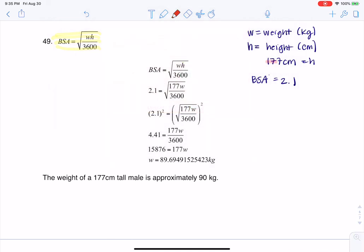So let me just change the color here. So I was given this and given this. So I was given the height of this male and I was given his body surface area and I was asked to solve for the weight. So we want to figure out what is the weight of this particular male who's 177 centimeters tall and has a body surface area of 2.1.